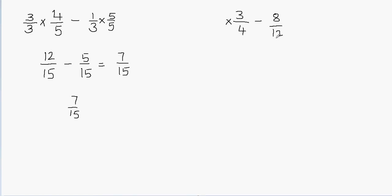Here we have 12, and we can't multiply anything into 12 to make it equal to 4 — so we will only be multiplying one fraction. We need to decide which fraction to multiply. Since 12 is a multiple of 4, we can't change 12 to become 4, but we can multiply 4 to make it 12. So what do I multiply 4 by to get 12?